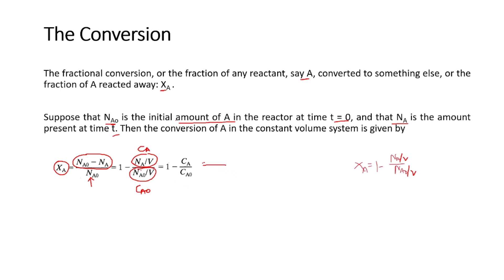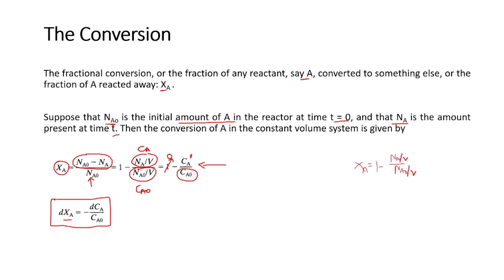Now if you differentiate this equation, you get d(xa) on the left-hand side. On the right-hand side, 1 is a constant so it gives 0, and you differentiate only the ca term. Since ca0 is also a constant (the initial amount is fixed), the result is: dxa = -dca / ca0.